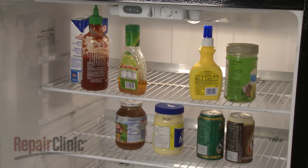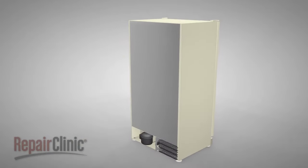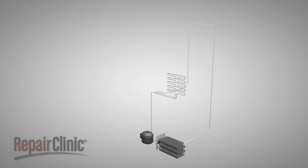Refrigerators help preserve food and keep beverages cold by removing the heat from the inside of the appliance. To accomplish this, a refrigerator uses a sealed system that pumps refrigerant through a set of coils.